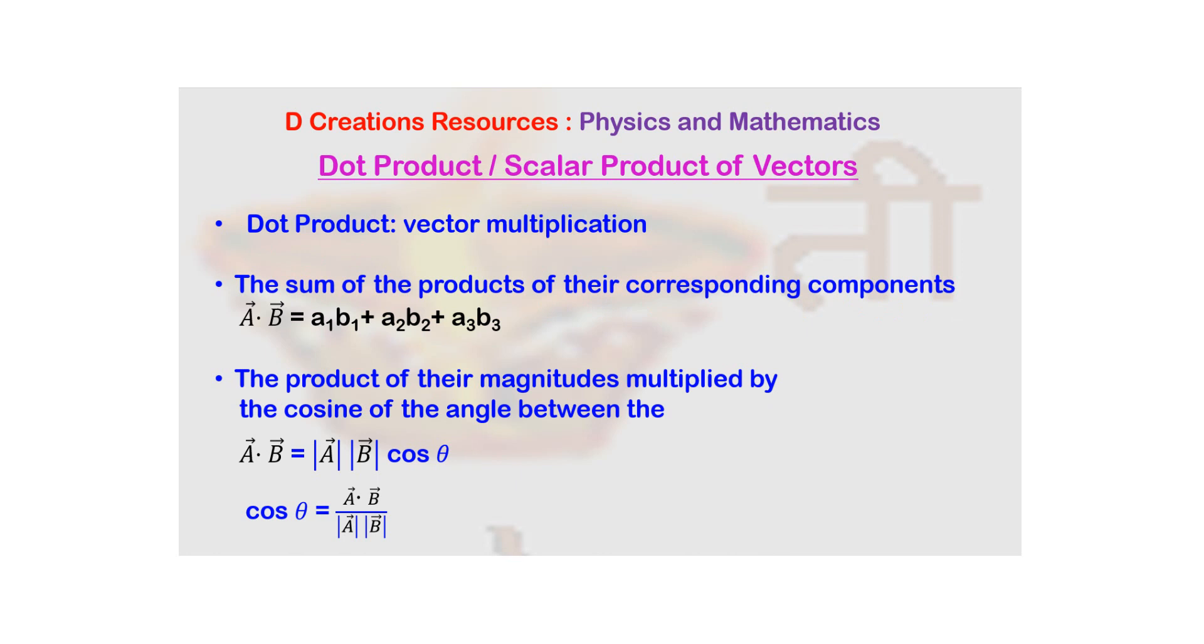Now if you recall, in case of these two vectors, the i components were namely a1 and b1. So you take their product. Similarly j components were a2 and b2, their product is taken. And k components were a3 and b3, their product is taken as well. And then all of them are added.